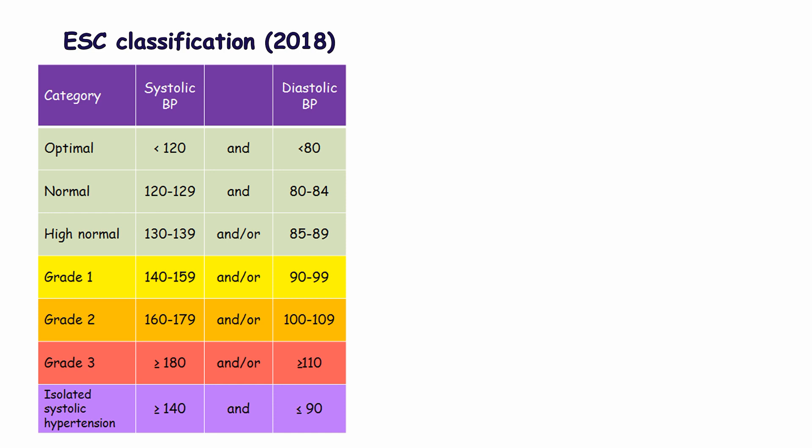Normal blood pressure denotes systolic 120–129 mmHg and/or diastolic 80–84 mmHg. High normal blood pressure means systolic 130–139 mmHg and/or diastolic 85–89 mmHg. Grade 1 hypertension means systolic 140–159 mmHg and diastolic 90–99 mmHg. Grade 2 hypertension is diagnosed when systolic ranges from 160–179 mmHg and/or diastolic ranges from 100–109 mmHg.